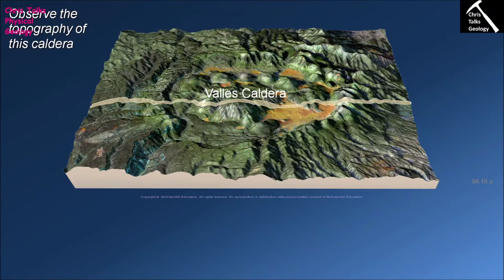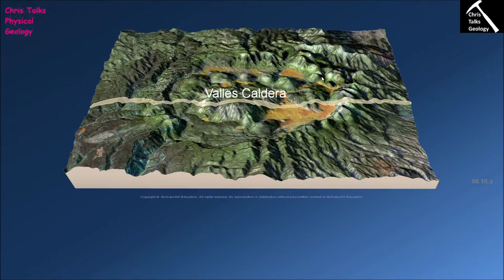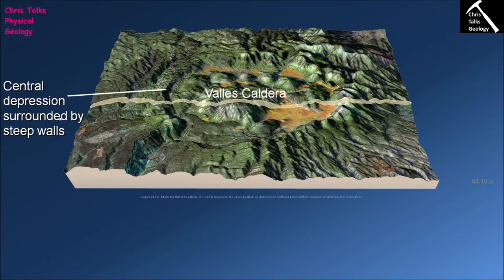So what is a caldera? A caldera is a style of volcanic eruption associated typically with felsic volcanic rocks. The caldera itself is an approximately circular depression on the surface of the earth, and we can see one in this image right here. The edges of a caldera will often be steep, near vertical, because the edge of the caldera is a normal fault, which tends to be quite steep — typically between about 70 and 90 degrees.